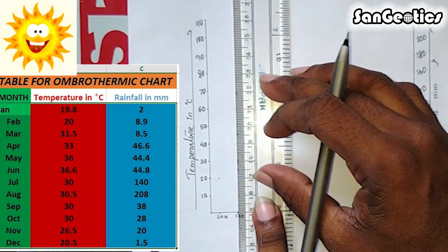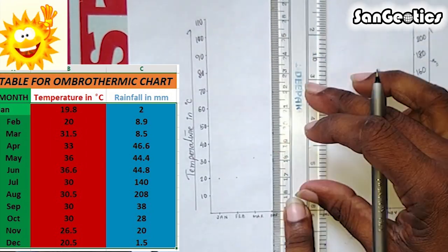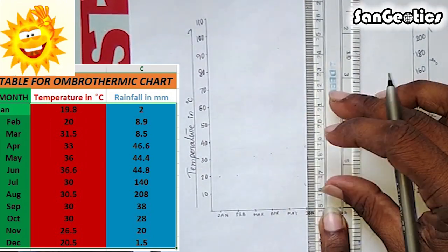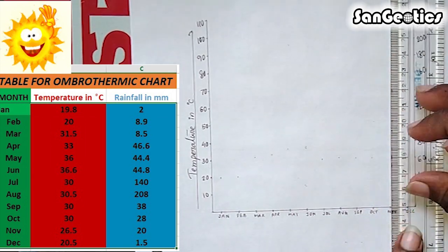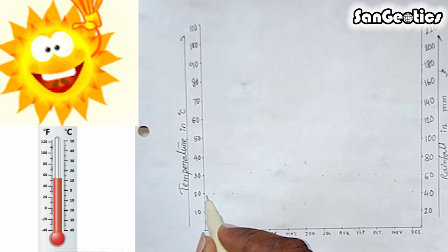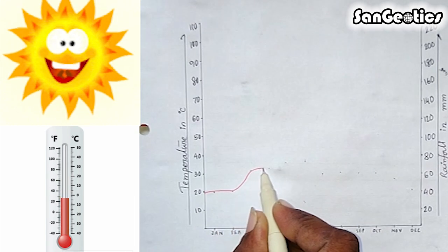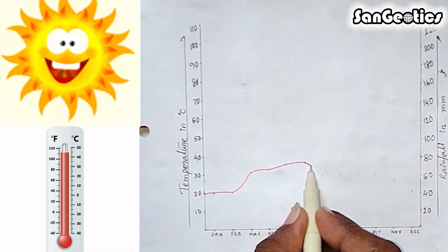Then plot the temperature data of the respective months and draw a line with red color corresponding to the temperature data points.